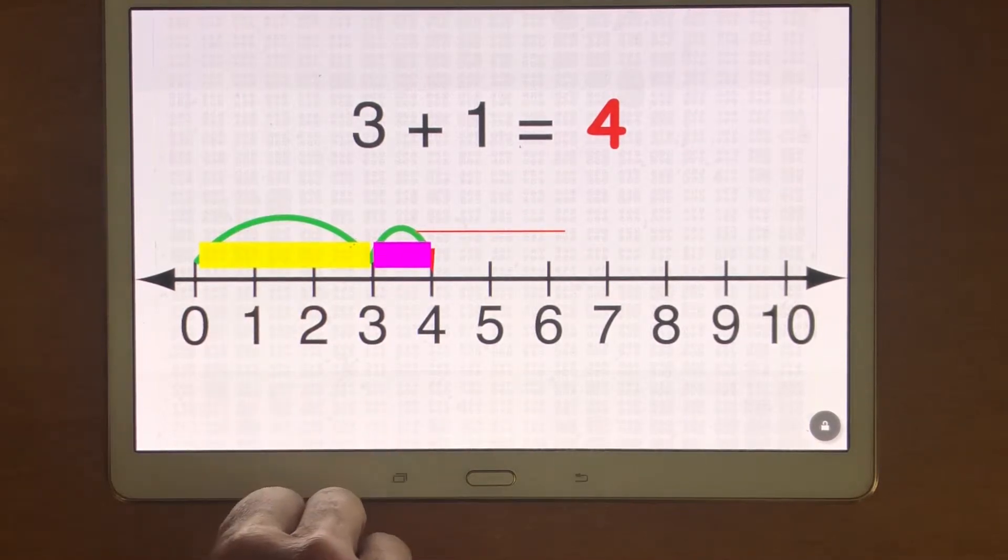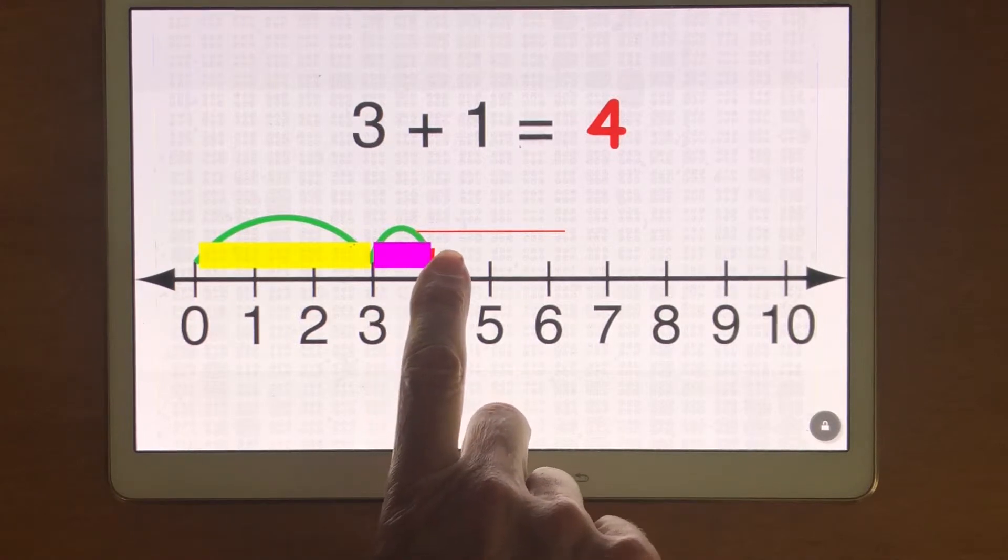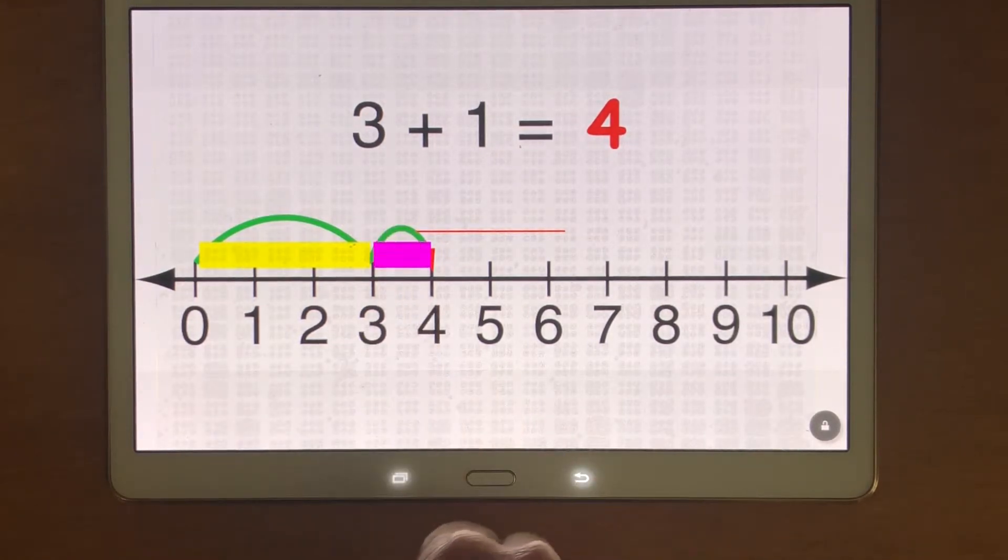So when I touch anywhere on that block it tells me the number three and then the second number that I'm adding is one so I've added a pink block and when I touch that block it says one.